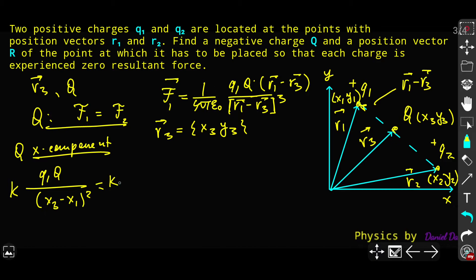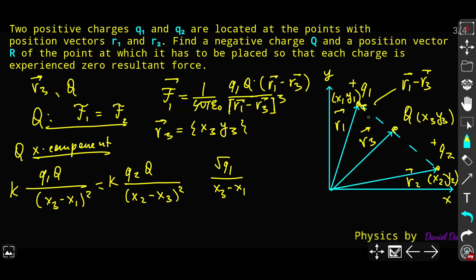We can simplify by taking the square root of both parts. We get square root of Q1 over (X3 minus X1), and square root of Q2 over (X2 minus X3). We don't need absolute values because according to our reference frame, X3 is greater than X1, and X2 is greater than X3 — so both sides are positive. Both parts must be positive, since the square root of each charge gives positive values.